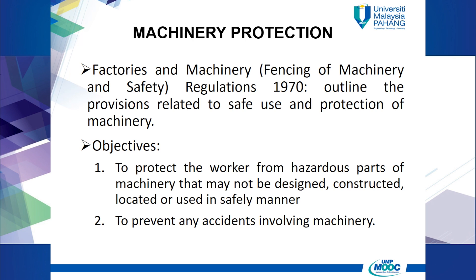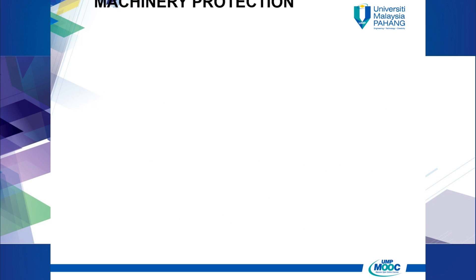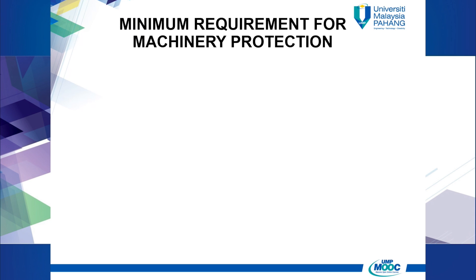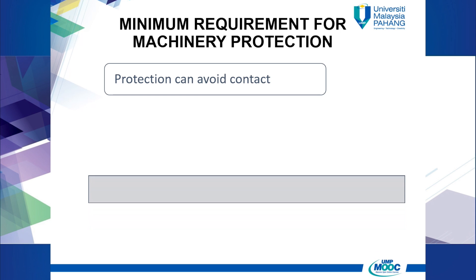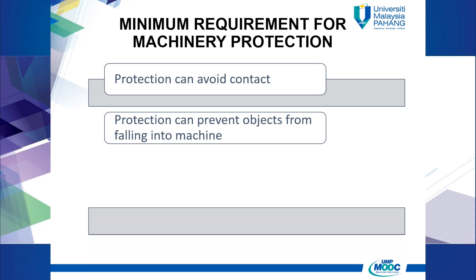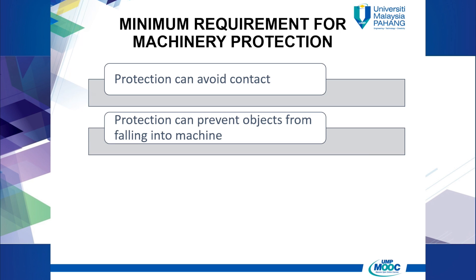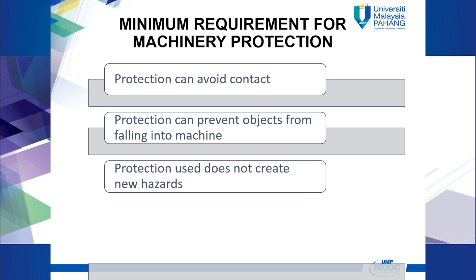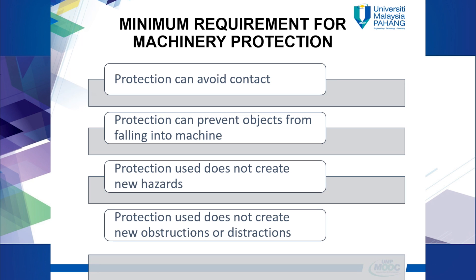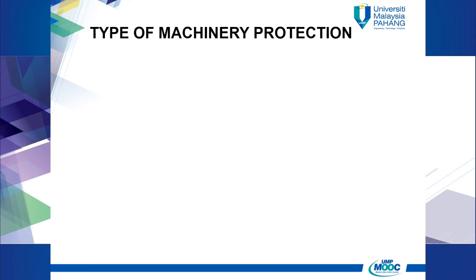The Fencing of Machinery and Safety Regulations 1970 has outlined the provisions related to safe use and protection of machinery. The objectives of these provisions are: number one, to protect the worker from hazardous parts of machinery that may not be designed, constructed, located, or used in a safe manner; and number two, to prevent any accidents involving machinery. When you select machinery protection, you must at least meet the minimum requirements: protection must avoid contact, protection must prevent objects from falling into the machine, protection used must not create new hazards, and protection used must not create new obstructions or distractions.